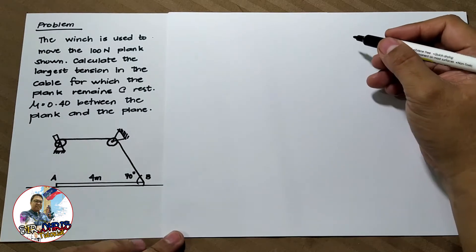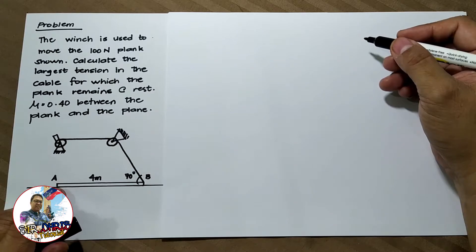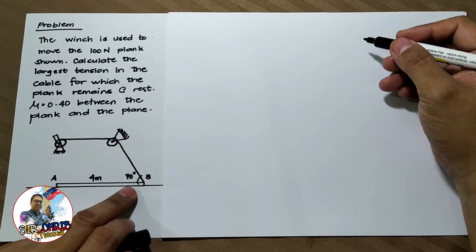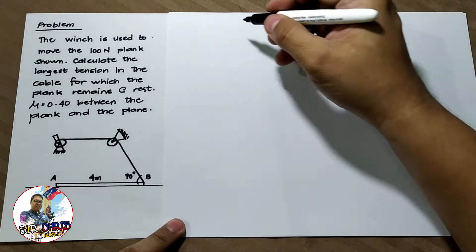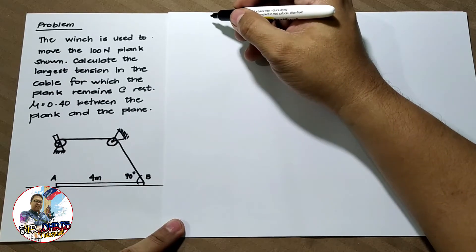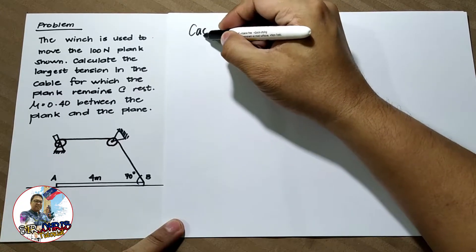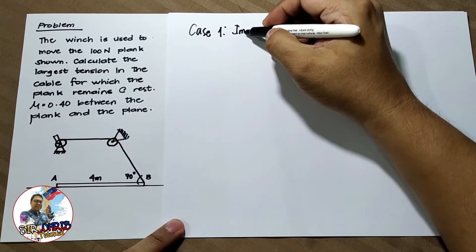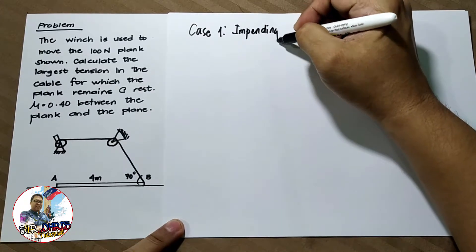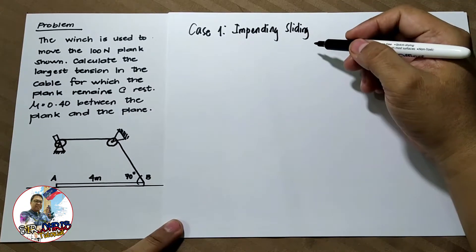There are two cases here. The plank may slide to the left, and the other case is if this plank will start to be lifted about point A. Let us analyze case 1: impending sliding.